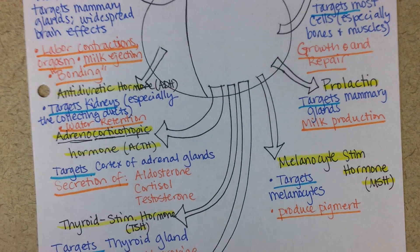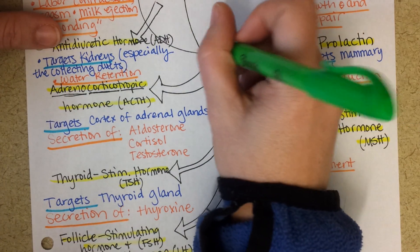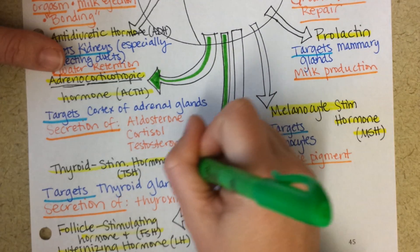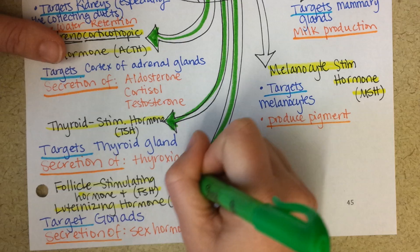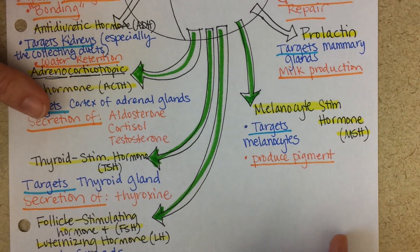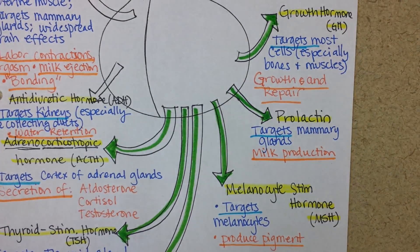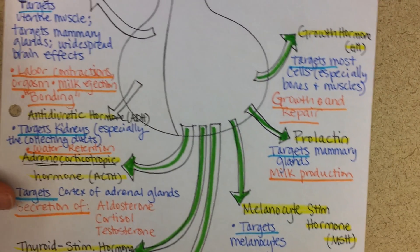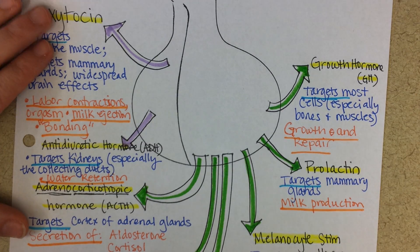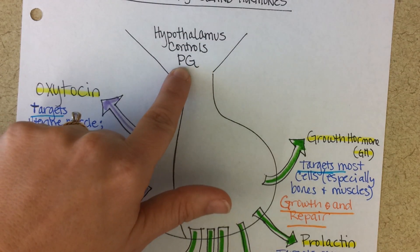To review: hormones released from the anterior pituitary gland are ACTH, thyroid-stimulating hormone, follicle-stimulating hormone, luteinizing hormone, melanocyte-stimulating hormone, prolactin, and growth hormone. The two hormones released from the posterior pituitary gland are oxytocin and anti-diuretic hormone. The release of all of these hormones is regulated by hormones or neuronal signals from the hypothalamus.